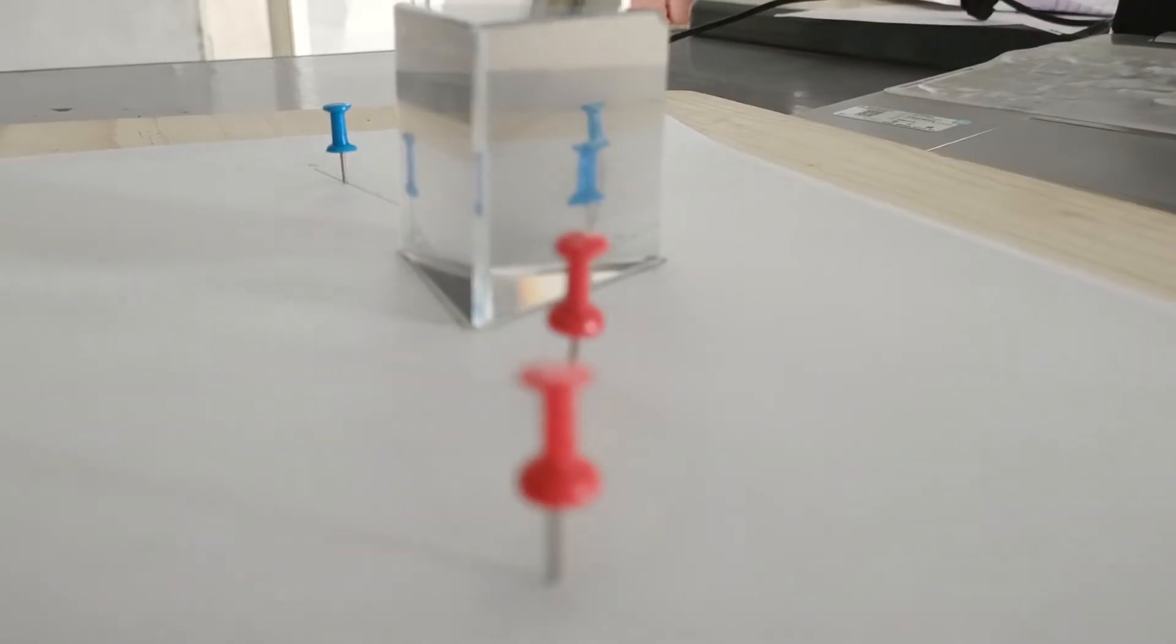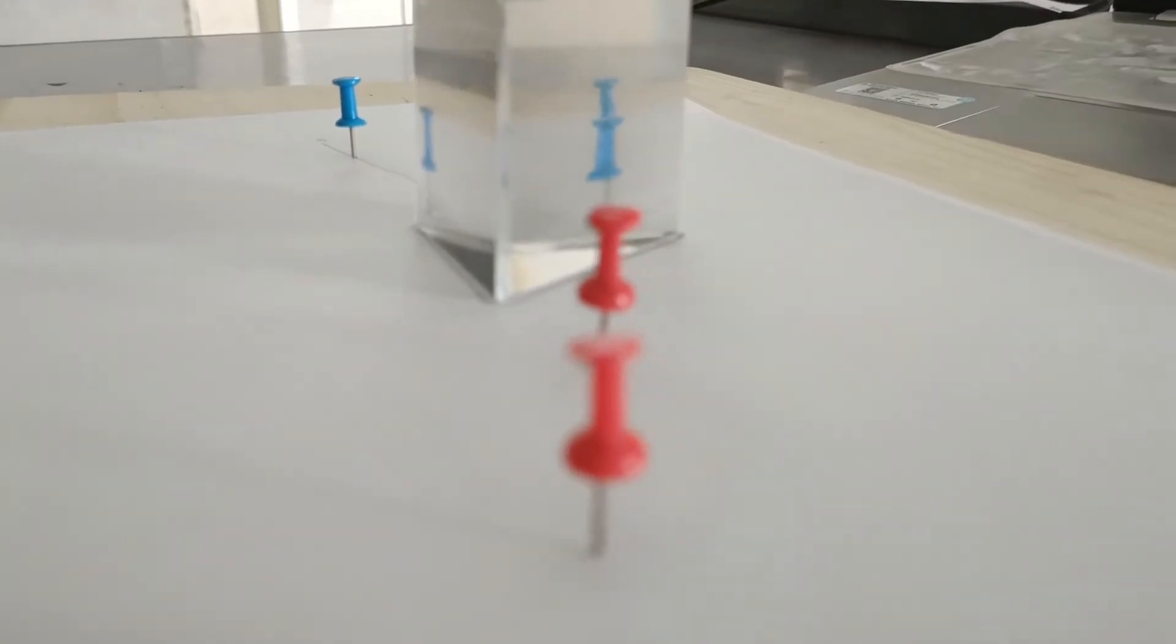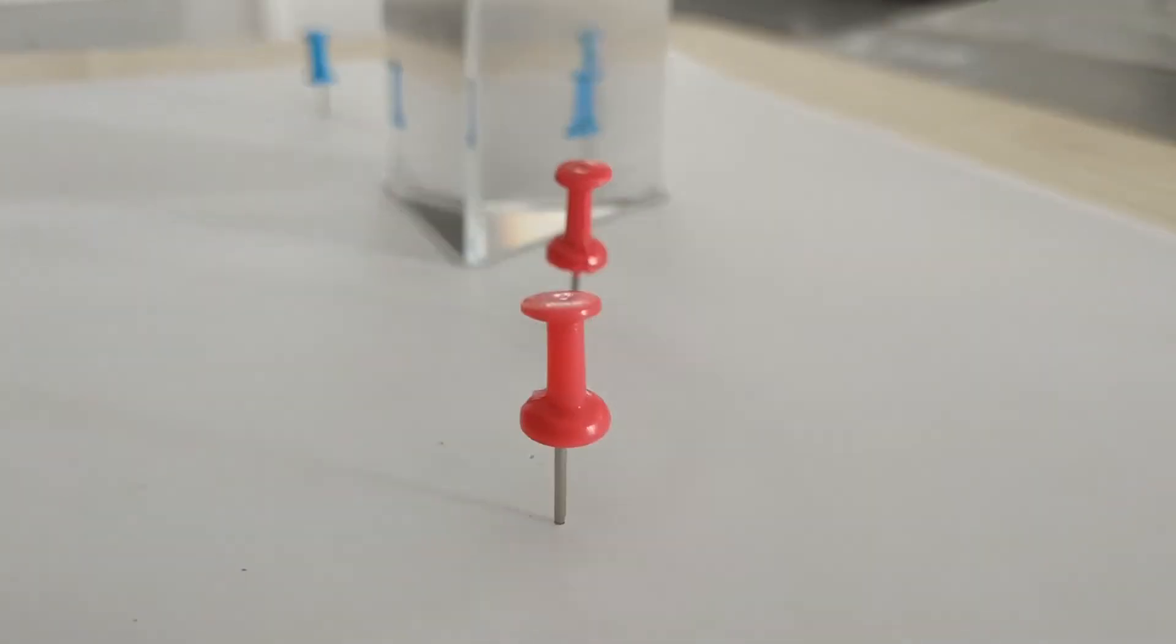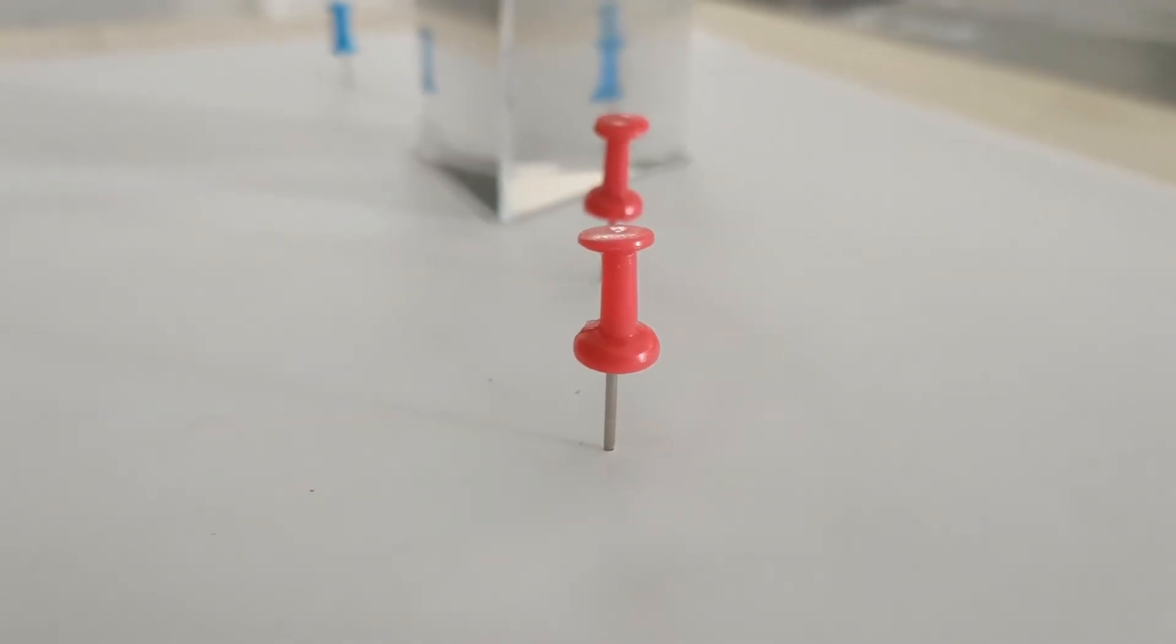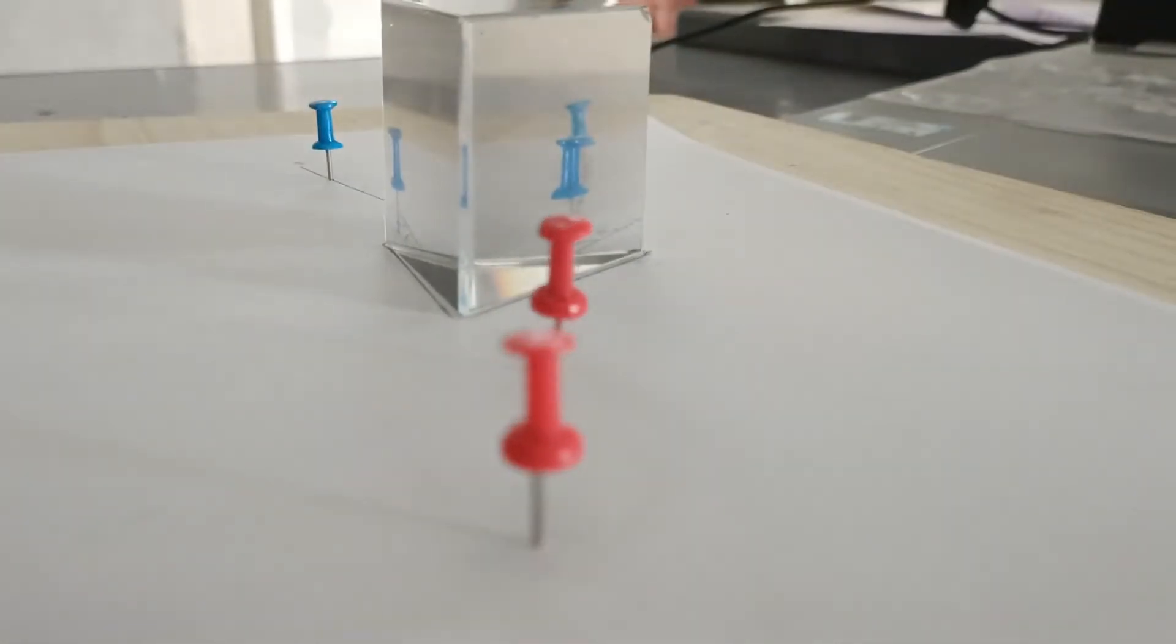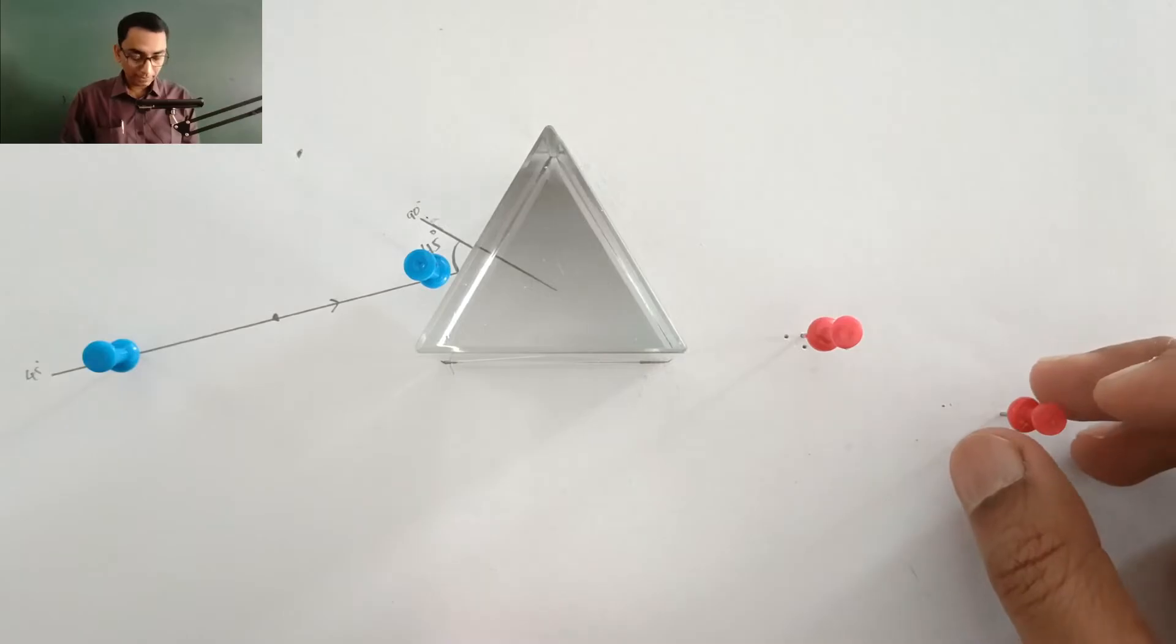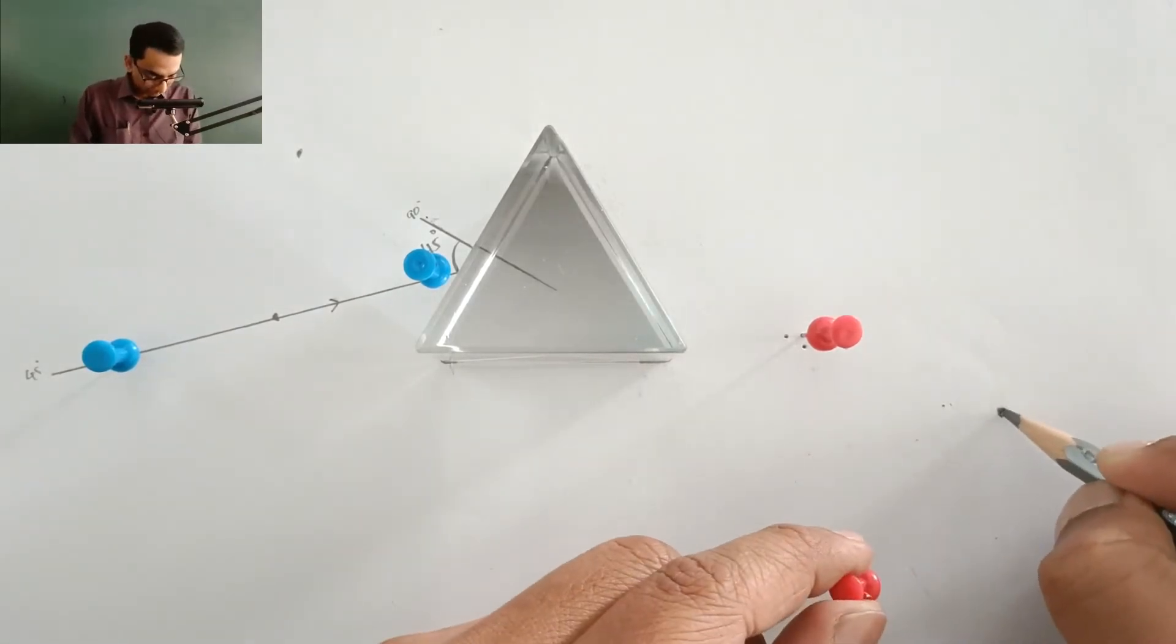Now here you are able to see that all four pins are appearing in the perfect straight line. This step has to go very well for the accuracy of the experiment. Now I am going to remove the pins and mark the pricked locations.